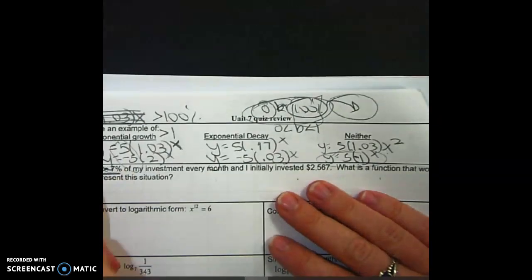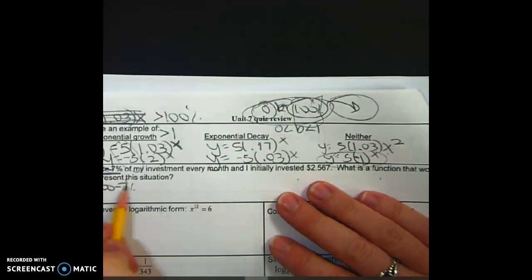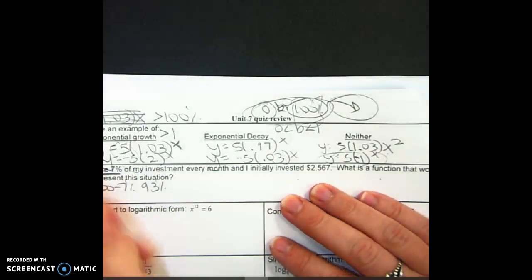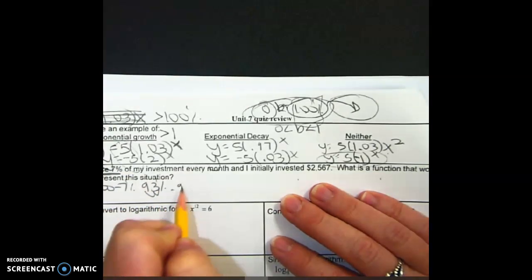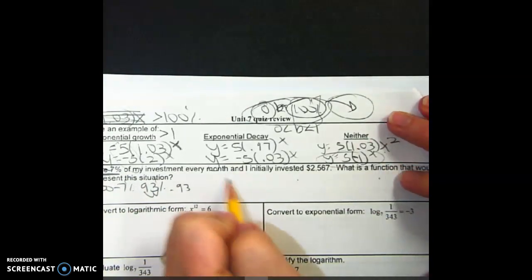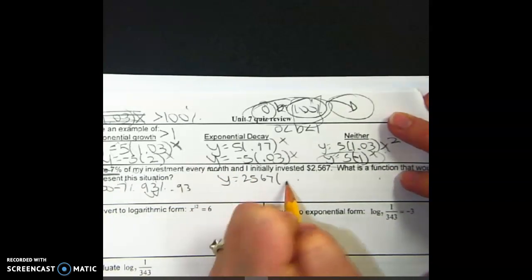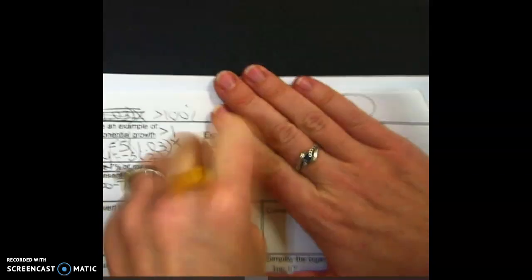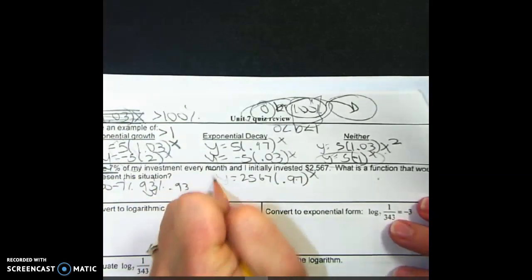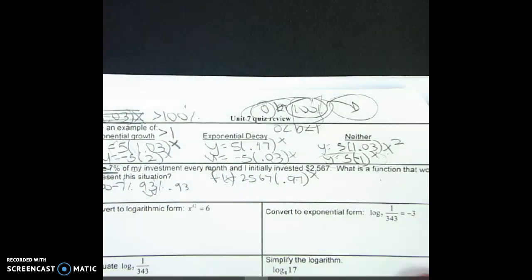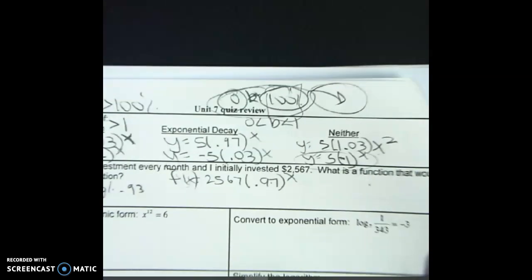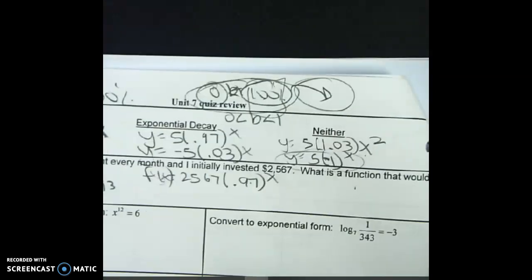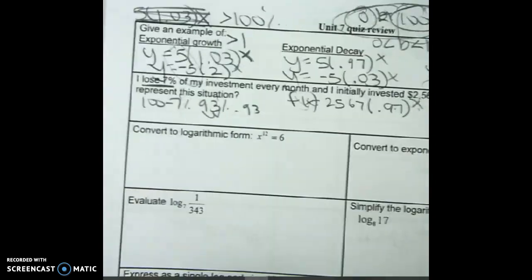It says I lose. So if you lose 7%, you now have 93%, which is 0.93. Okay, you initially invest 2, 5, 6, 7, 0.97 to the x. Oh, create a function. If it's a function, you don't write y. You write f of x. Okay? If I wanted to know how much money I'd have after 10 years, you'd plug in 10.